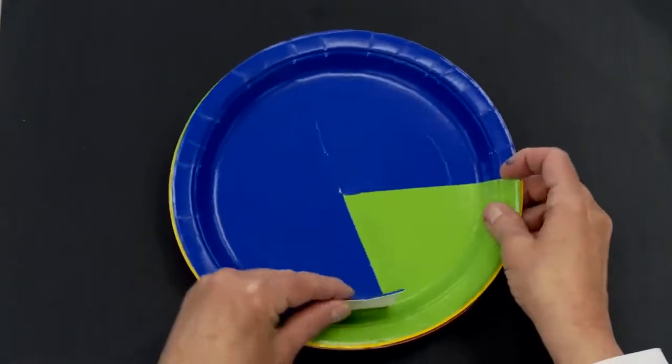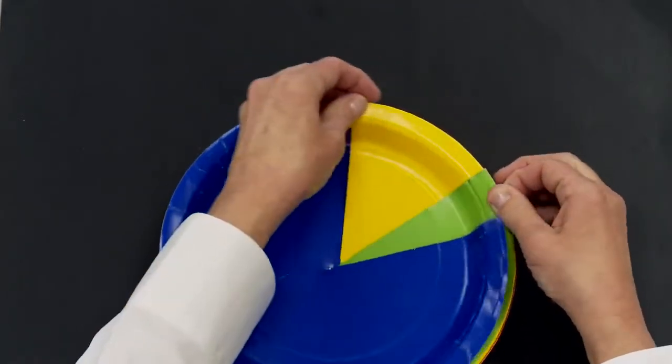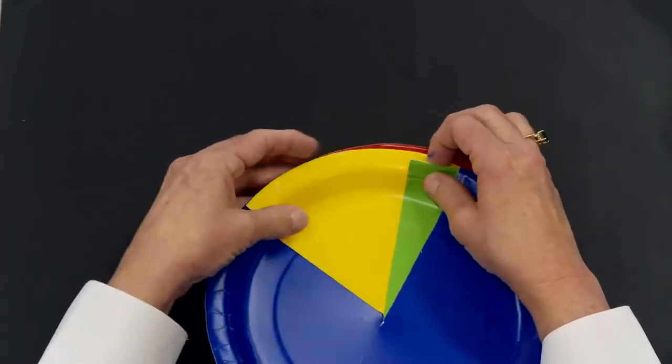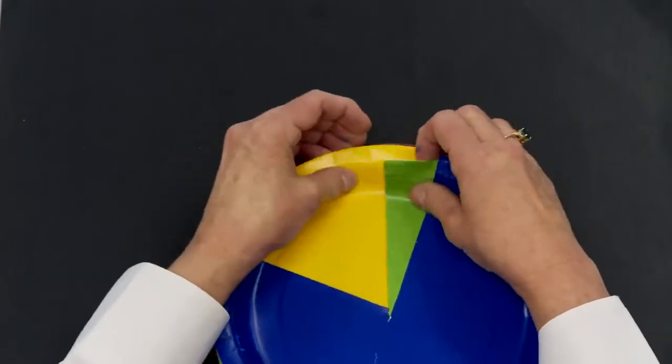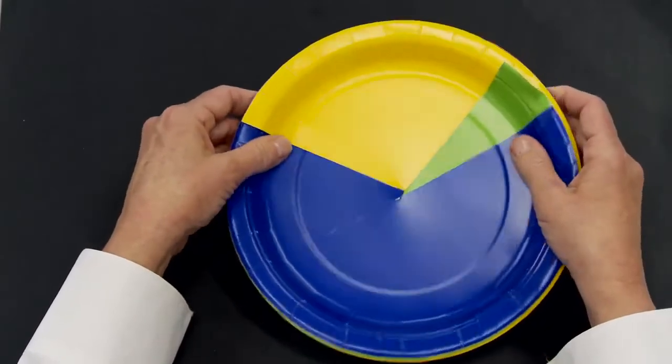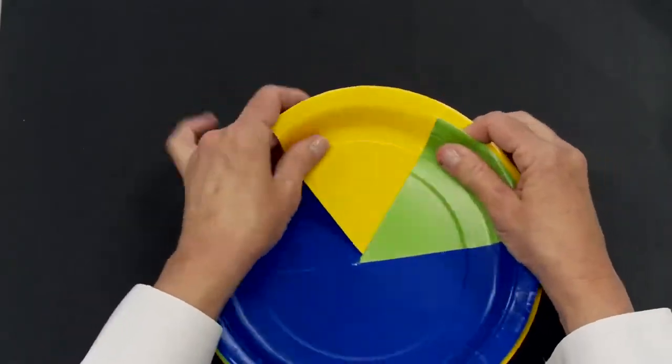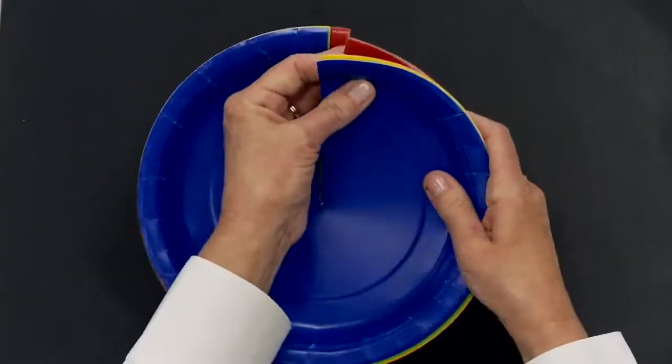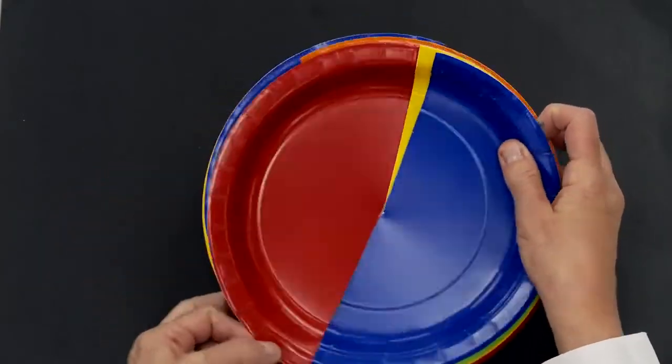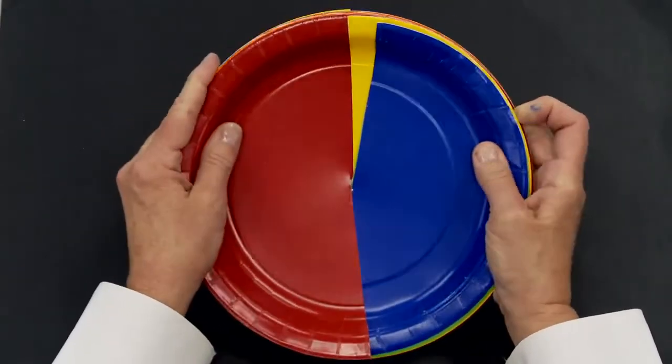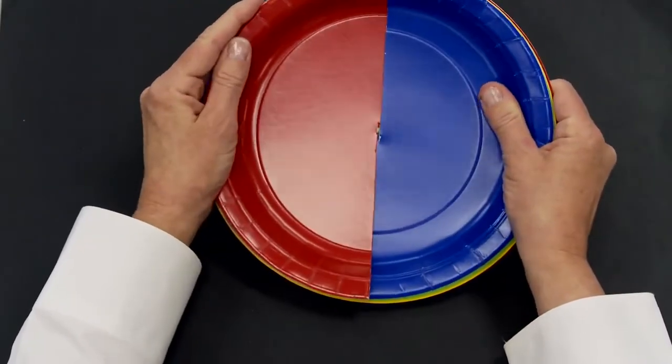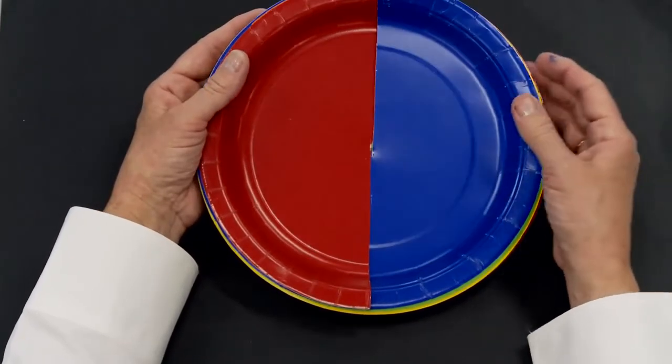So these fraction plates are a tool for showing part to whole relationships. I can also use them with data collection. So I might say, show me a set of data where half my students, so I'm going to slide all my plates back together to start over, half my students picked cherry pie as their favorite. Now, there's half my data picking cherry pie, half my data picking blueberry.